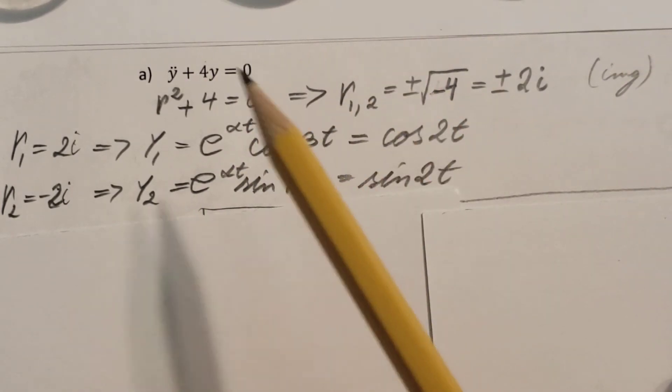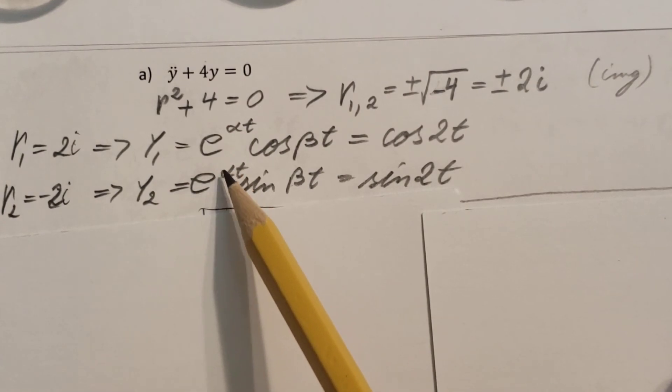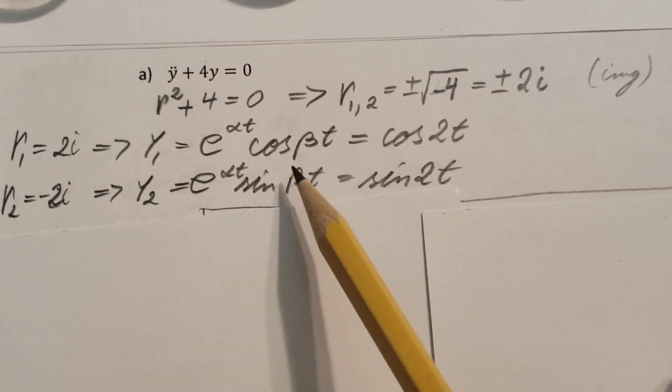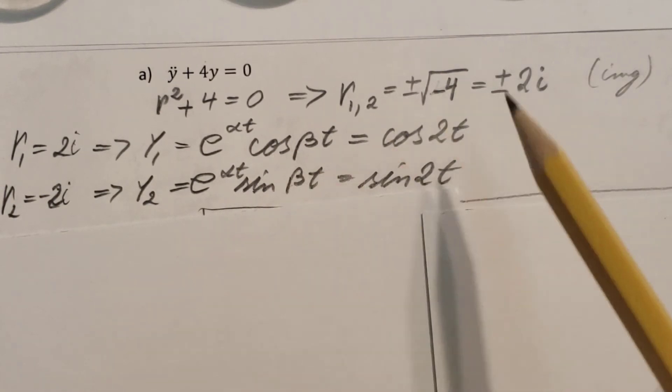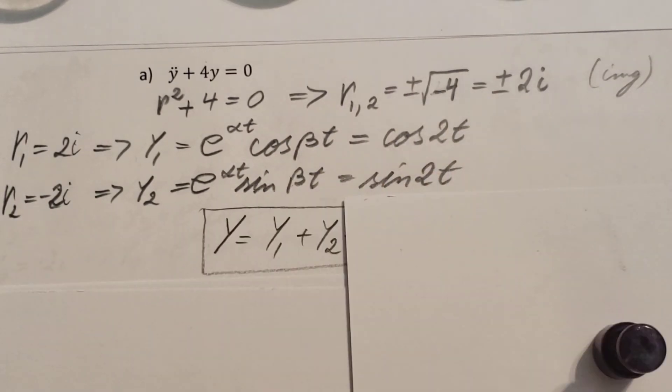And this will, again, alpha 0 times sine beta t. The beta is the 2, so I'm going to take it, plug it in, sine 2t.